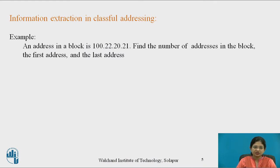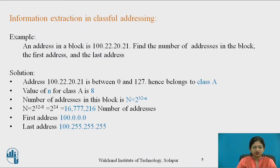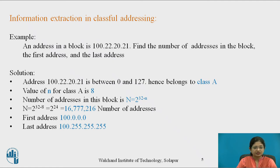Let me explain with an example. An address in a block is 100.22.20.21. Find the number of addresses in the block, and also find the first and last address. The address 100.22.20.21 is in the range of 0 to 127, hence it belongs to Class A. The value of n for Class A is 8. The number of addresses in this block is 2 raised to power (32 minus 8), which is 2 raised to power 24 — more than 16 lakhs.